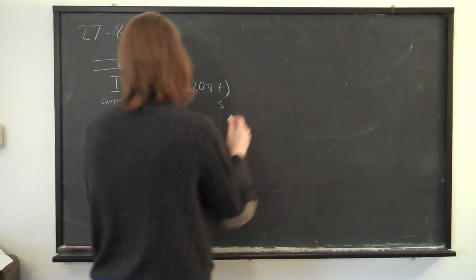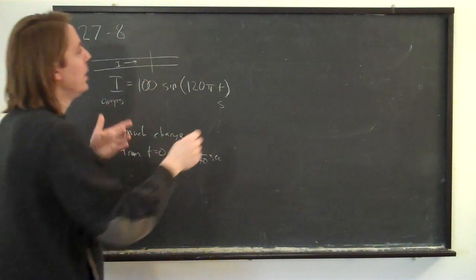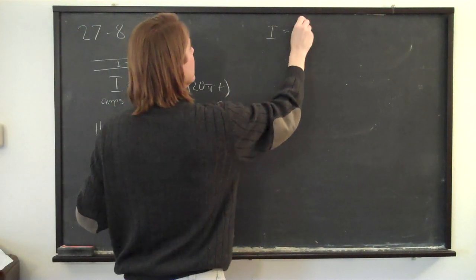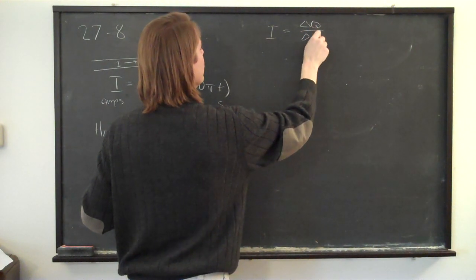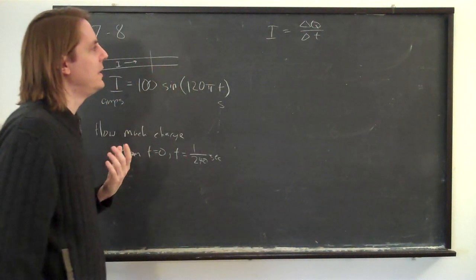We know that our original definition of current is you take some plane in the wire, and we say that the current is just the amount of charge, delta Q, that flows in some time, delta T.